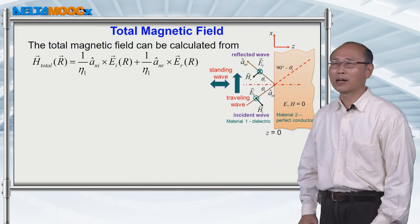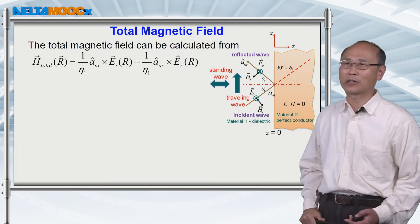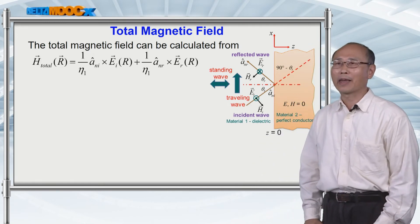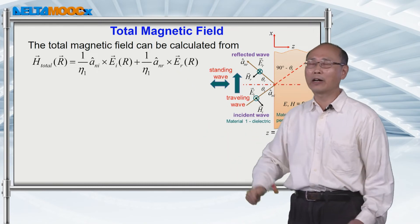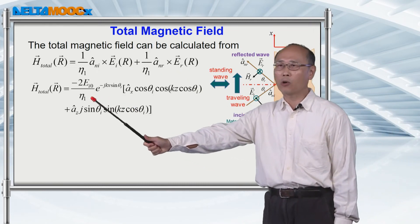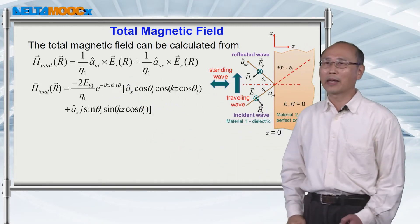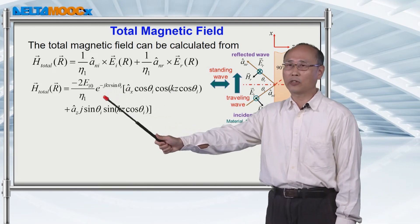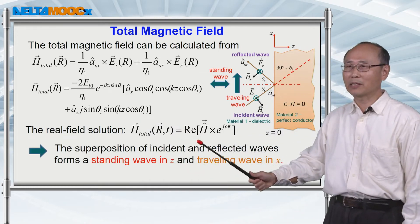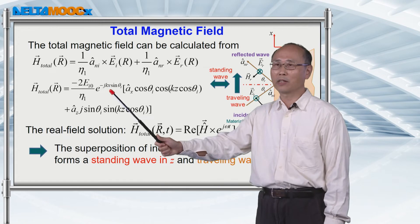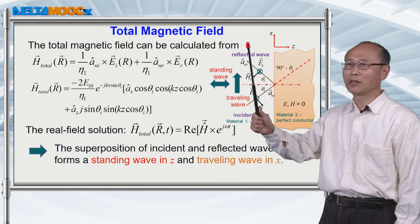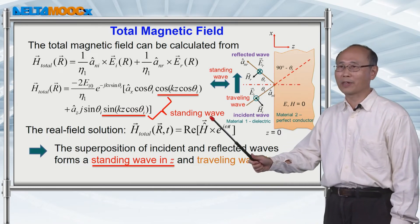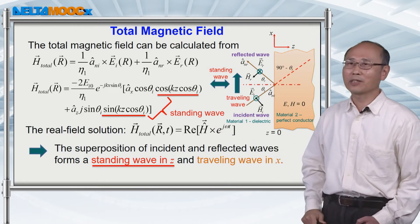You can get a similar conclusion by calculating the total magnetic field. Once you know the electric field, you can always calculate the magnetic field for a plane wave. Given the solutions for E_i and E_r, you calculate the total magnetic field by summing those two components. Converting to the real expression, you see one term dependent on time — the propagating component along the x direction — and another term independent of time, which is the standing wave along the z direction.